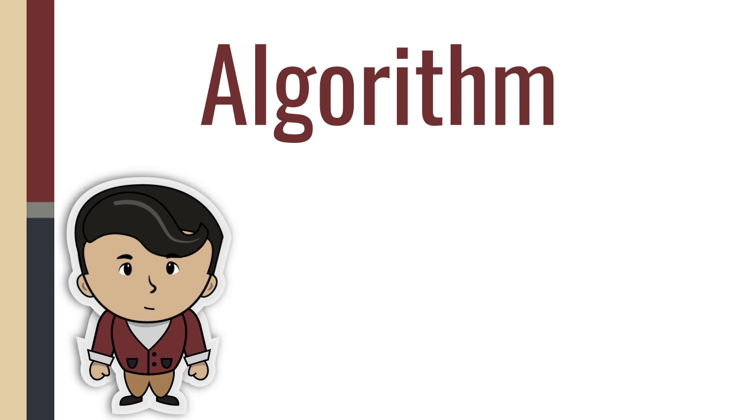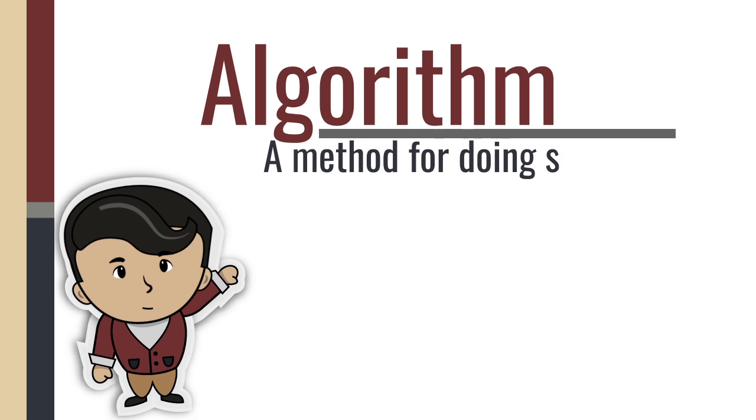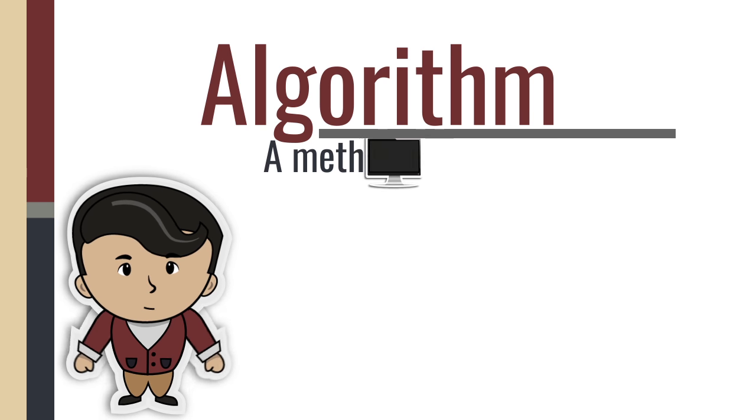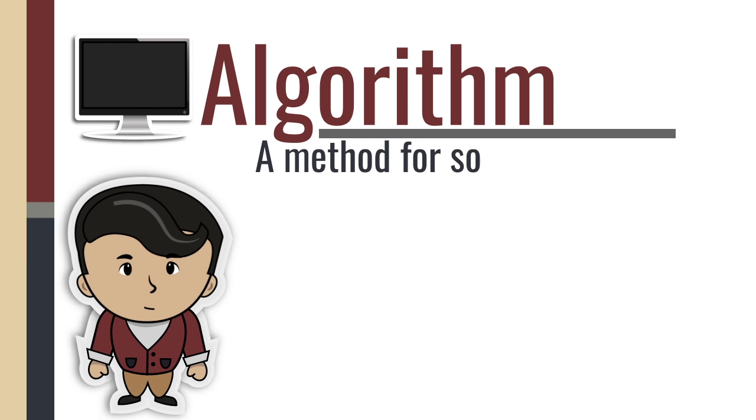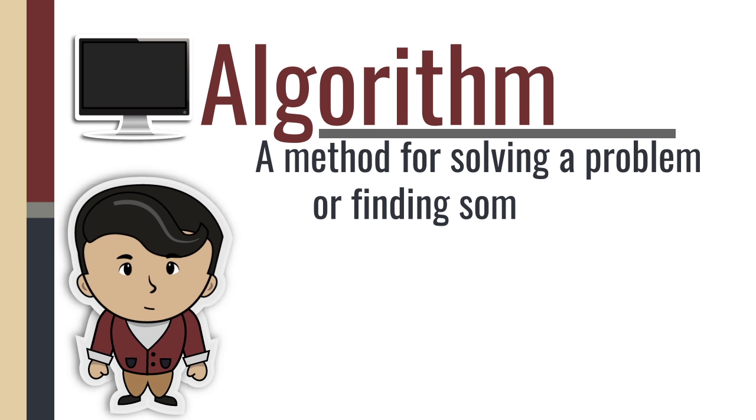Simply put, an algorithm is a method for doing something. A computer algorithm is a method for solving a problem or finding some answer.